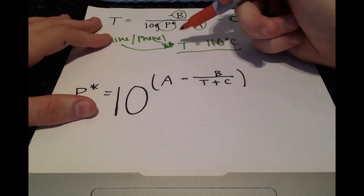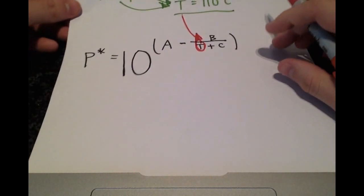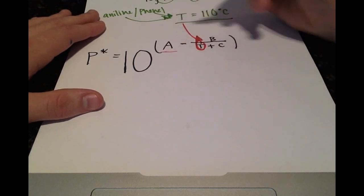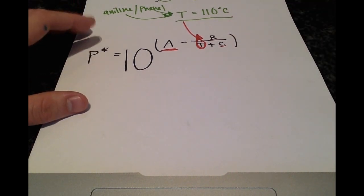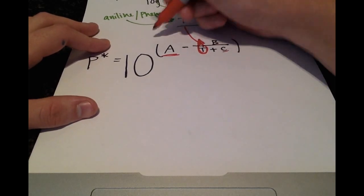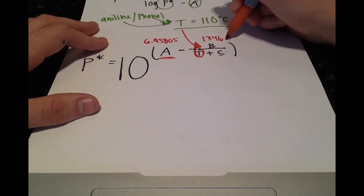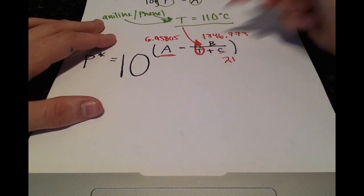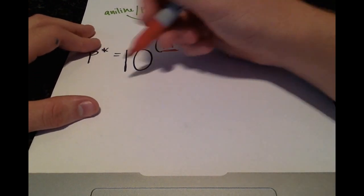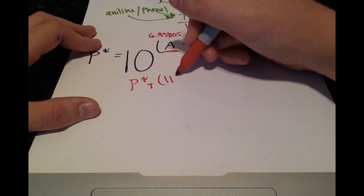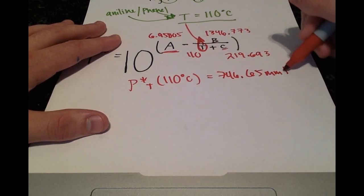And now the reason this is important is we need this value here to plug into this temperature. Because for toluene, we have the constant values A, B, and C. And now we know that the temperature that we're looking at, before the temperature of our system was unknown. But now that we know that, we can fill in the remaining constants. The A is 6.95805 and the value for B is 1346.773 and for C, 219.693 and 110. And if you substitute all those values, you'll get that the vapor pressure for toluene at 110 degrees Celsius is 746.65 millimeters of mercury.